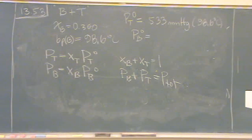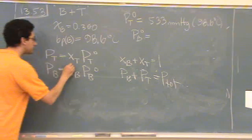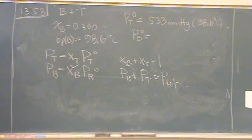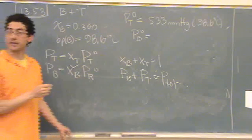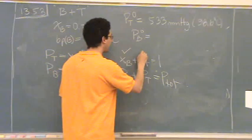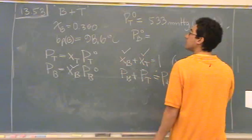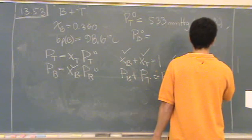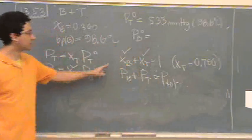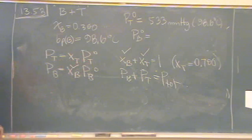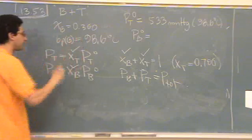Okay, let's see. We have Xb. Check. That also means if we have Xb, we must have Xt. I'll just write it down right now. What's Xt? 0.700 because it's 1 minus Xb. So, I've got that one.